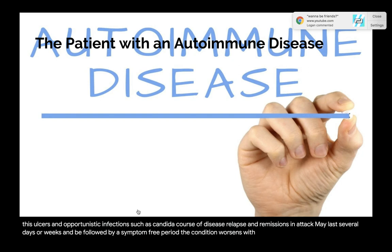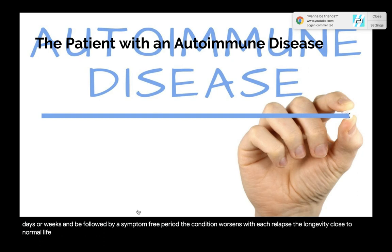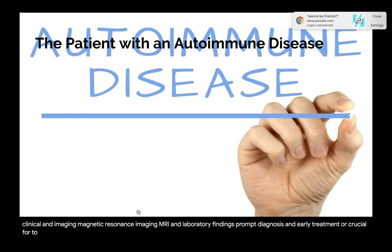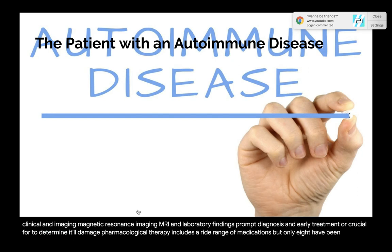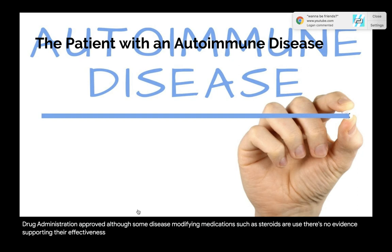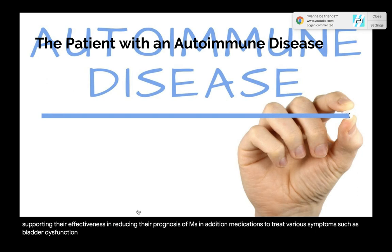Course of MS: relapses and remissions — an attack may last several days or weeks, followed by a symptom-free period; the condition worsens with each relapse. Longevity is close to normal lifespan, with approximately 80% having functional limitations after 15 years. Diagnosis is based on history, clinical findings, MRI, and laboratory findings; prompt diagnosis and early treatment are crucial. Pharmacological therapy includes a wide range of medications, though only eight are FDA-approved. Medications to treat various symptoms such as bladder dysfunction may also be required.